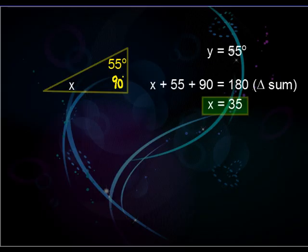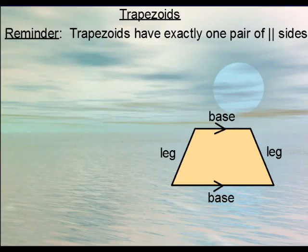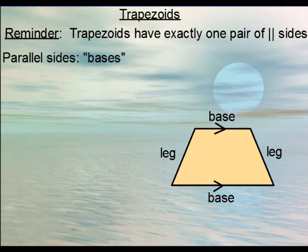Let's move on to trapezoids. Trapezoids are four-sided figures that have exactly one pair of parallel sides. Those parallel sides are called bases — so every trapezoid has two bases, typically seen on the top and bottom. The other two sides are referred to as legs, and every trapezoid has two legs.